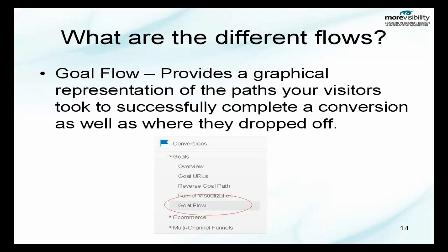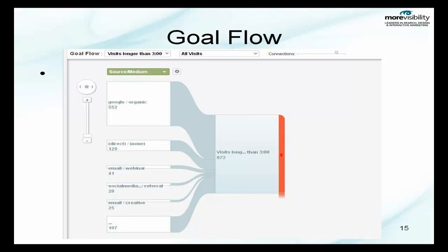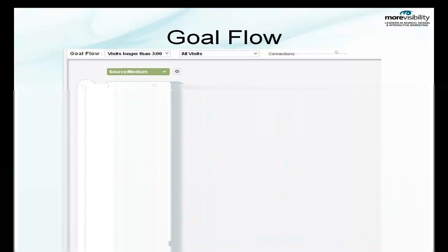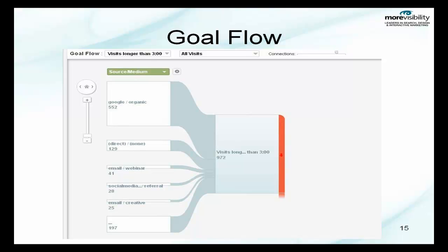With goal flow, this is how people went through your site to complete your goals — whether that's an e-commerce goal, signing up for a newsletter, or filling out a contact form. You can see where users dropped out before completing your goal and decide if the goal path is too long. We chose a goal showing visits longer than three minutes — Google users came in at 552 and were able to stay. If you choose a goal with a longer path, you can see if the flow is too long, and decide your sign-up form or e-commerce checkout process is too long. If you make it shorter, you might have more conversions.